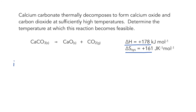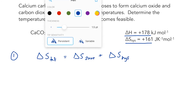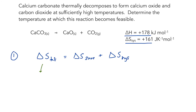Method 1: using entropy changes. For a reaction to be feasible, the total entropy change must be positive — or at least zero, because at zero the reaction is at equilibrium (Kc = 1). That is the temperature at which the reaction just becomes feasible. Total entropy change equals ΔS_surroundings plus ΔS_system. We know how to calculate ΔS_surroundings: it equals minus ΔH over T.